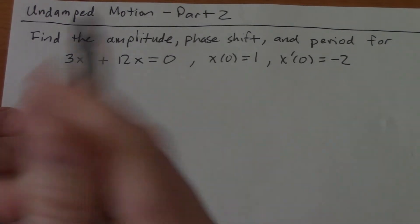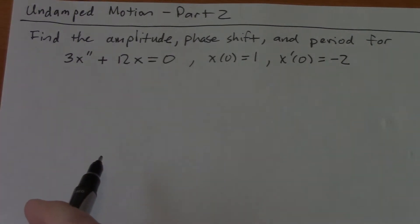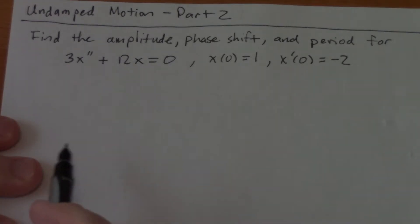All right, so in this video we're going to do an example of a problem. So we mentioned how to write C1 cosine omega t plus C2 sine omega t in a different form. So we're going to do all that.